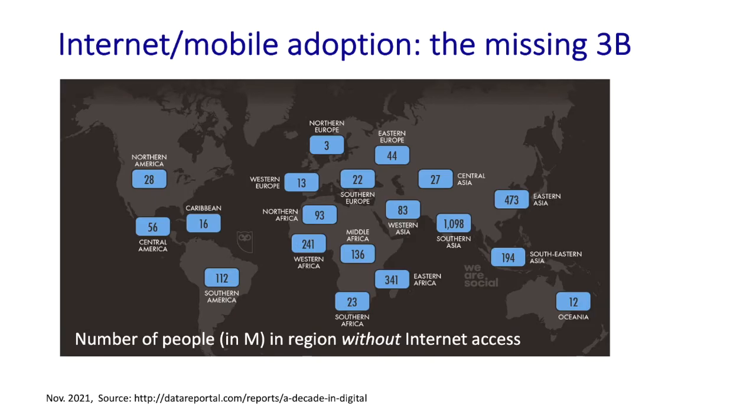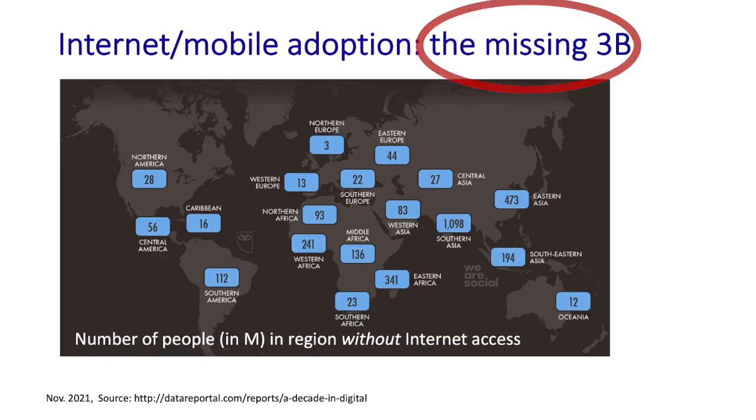This second graphic shows the number of people in millions that do not have internet connectivity in different regions. There are still 3 billion people not connected to the internet, so there's still a ways to go and a lot of important work to be done. The statistics we've just seen are pretty interesting, but they're pretty coarse-grained — simply whether or not you have connectivity to the internet or mobile telephone network. We can go beyond these and ask some very interesting, even deeper questions.